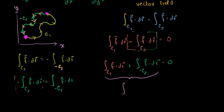The combination of C1 and minus C2 is equivalent to a closed path. We could call it C1 plus minus C2, but this applies to any closed path where our vector field F has a potential, or is the gradient of a scalar field, or is conservative. So we can write this as a closed path integral of F dot dr, and that equals 0.